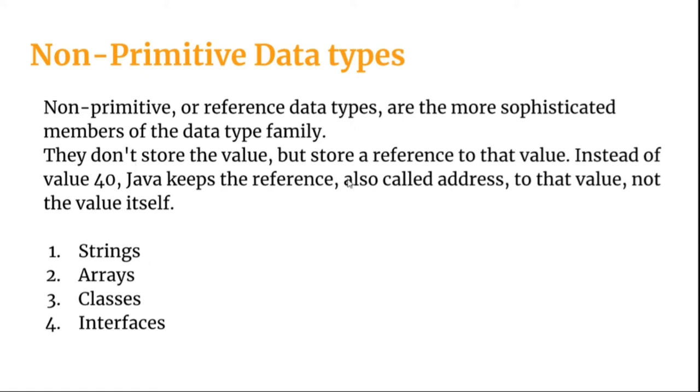Instead what they do is they store a reference of that value. The reference is also known as the address. So let's say if the value of the variable is 40, non-primitive data type won't store the value of 40. Instead it will store the address of this 40.